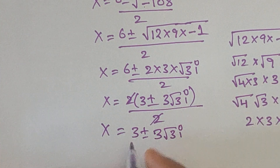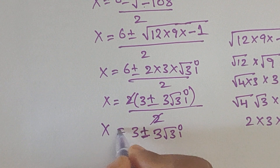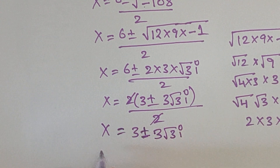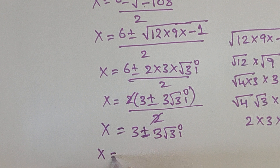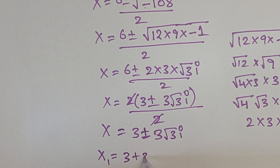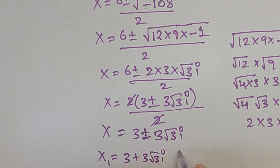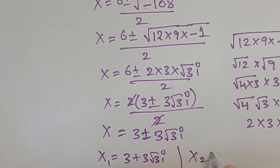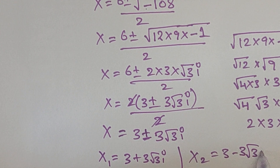So we have our x values: x1 equals 3 plus 3 square root of 3i, and x2 equals 3 minus 3 square root of 3i.